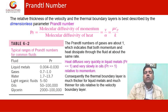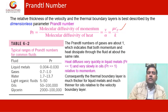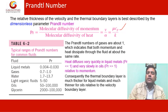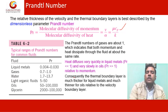Substituting mu equal to mu upon rho and alpha equal to K upon rho Cp, the quantity mu Cp upon K is obtained. The Prandtl number of most gases is about 1, which indicates that both momentum and heat diffuse at about the same rate. Heat diffuses very quickly in liquid metals and very slowly in oils relative to momentum. Consequently, the thermal boundary layer is much thicker for liquid metals and much thinner for oils relative to the velocity boundary layer.